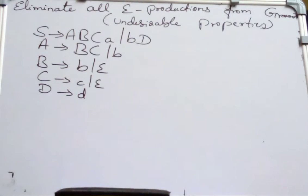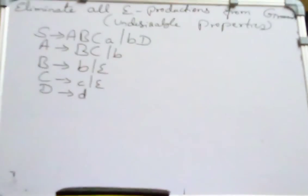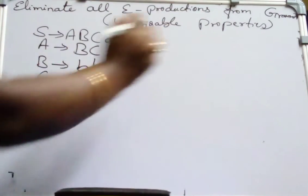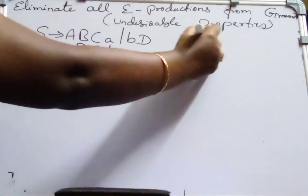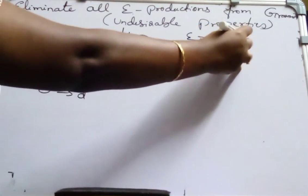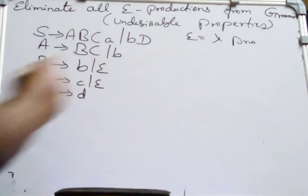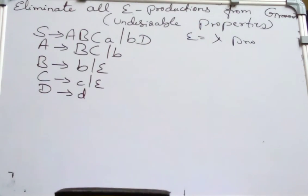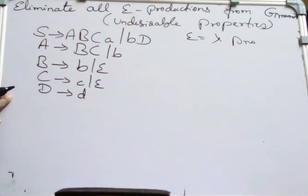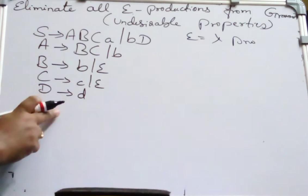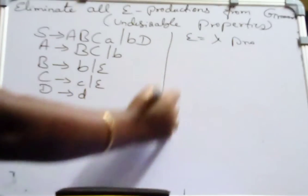Hello everyone, welcome to my channel. This is Vijay Lashmi. Today I am discussing how to eliminate the epsilon productions from the grammar. Epsilon productions, or we can call them lambda productions, are undesirable properties. So given a grammar, first observe which productions derive epsilon.